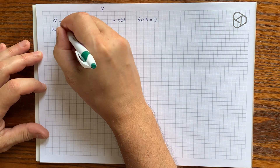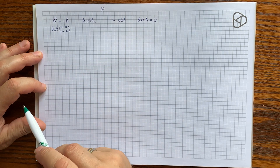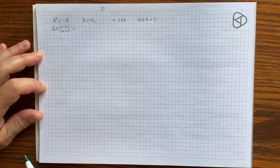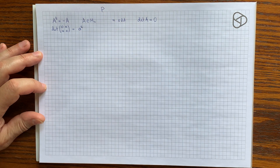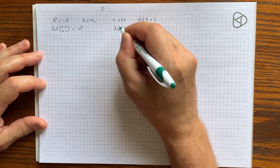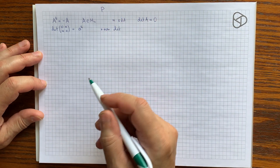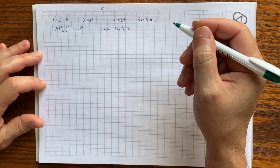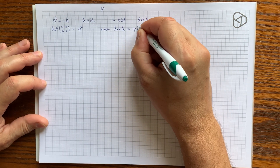We saw that when the size is odd the determinant is always zero. When the size is even, the easiest size-two anti-symmetric will look like that. Using the definition of the determinant we take the product of off-diagonal entries with a minus sign, and negative times negative a squared gives us a squared. So the determinant is a perfect square.